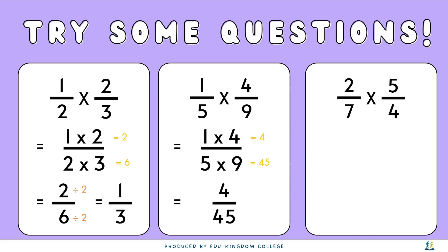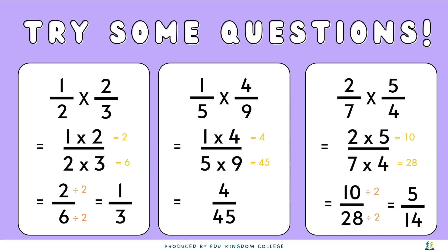The last question on the right: 2 over 7 times 5 over 4. The numerators — 2 times 5 — give us 10, and the denominators — 7 times 4 — give us 28, giving a new fraction of 10 over 28. Simplifying by dividing both numerator and denominator by 2 gives us a final fraction of 5 over 14.